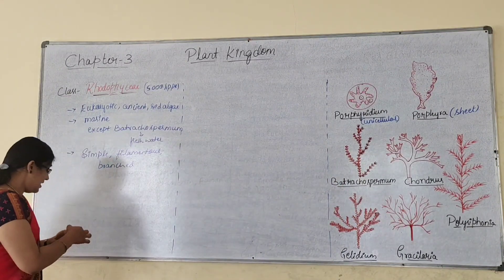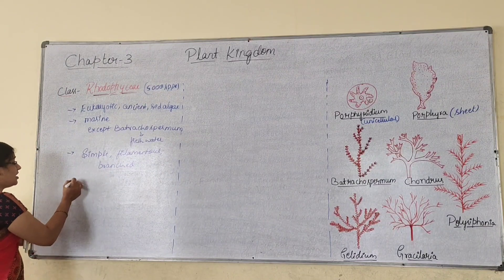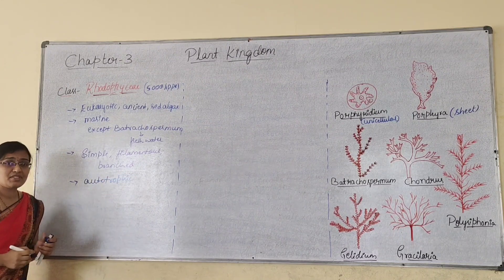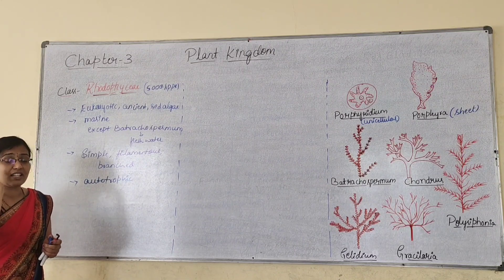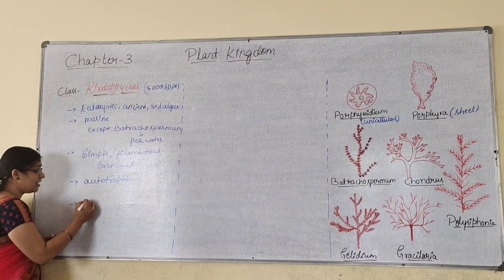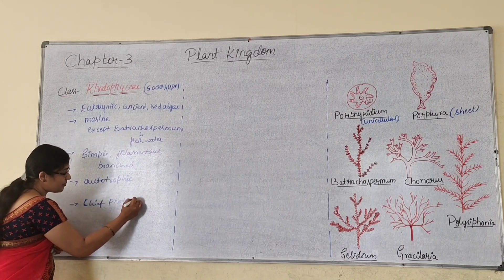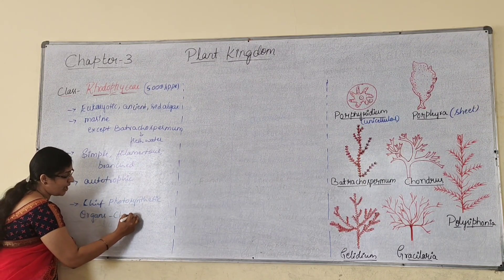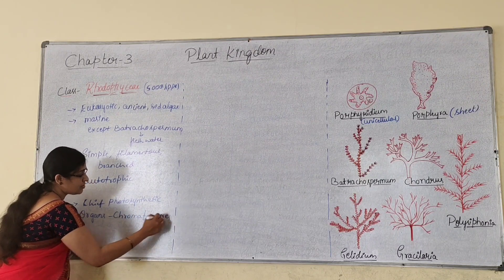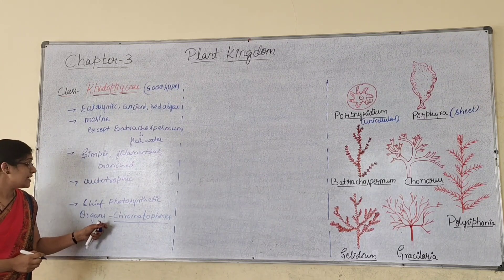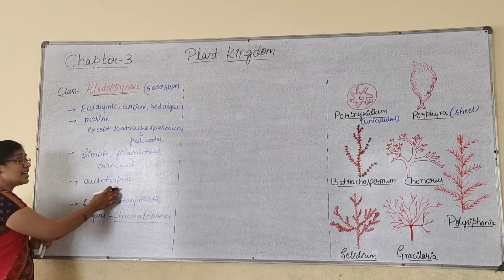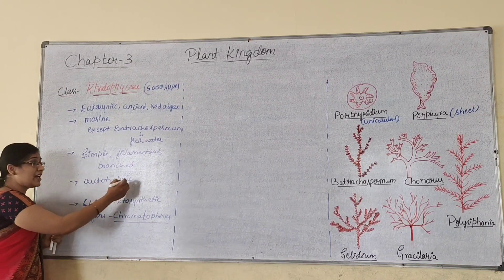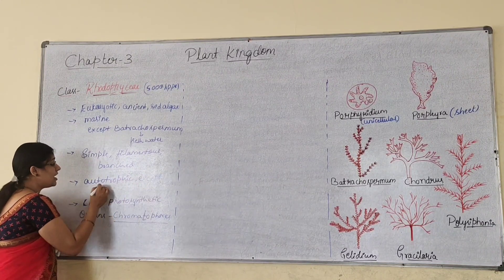These are usually autotrophic in nature. The rhodophycean members are usually autotrophic in nature due to the presence of photosynthetic pigments. The chief photosynthetic organs are called chromatophores. In case of red algae, all are usually autotrophic except Harvena.